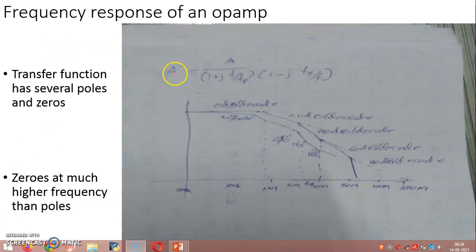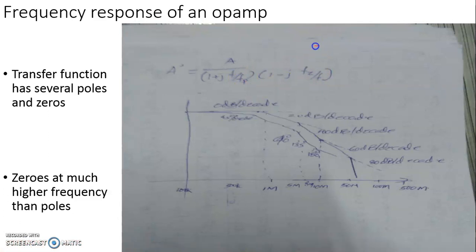We have taken an approximate expression for the transfer function of an IC operational amplifier involving a pole and a zero. The circuit or IC has a pole at frequency Fp and a zero at frequency Fz, and it is evident that Fz is much greater than Fp. Practically, instead of having one pole, you may have more than two or three poles.